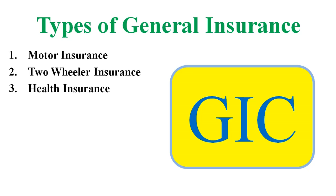You can also opt for additional riders along with a comprehensive health insurance policy to enhance your plan, such as room rent waiver, maternity cover, critical illness cover, hospital cash, and personal accident rider. Health insurance is divided into four categories: comprehensive health insurance, family floater cover, surgery cover, and individual cover.